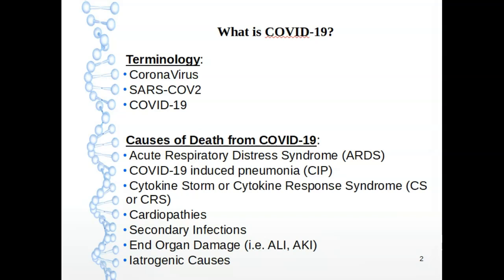How do you actually die from COVID-19? There are multiple ways that you can, including acute respiratory distress syndrome, which is when your alveolar sacs will collapse, COVID-19 induced pneumonia, which is a type of pneumonia you can get from SARS-CoV-2 virus, cytokine storm, which is also known as cytokine response syndrome, cytokine release syndrome, or sometimes hyperimmune release syndrome.